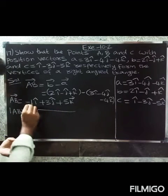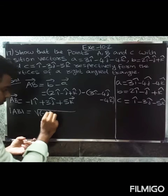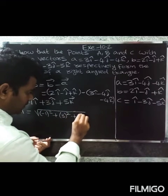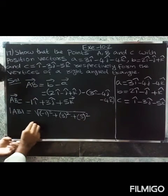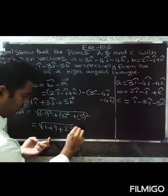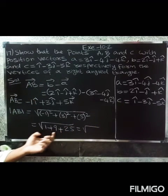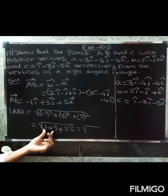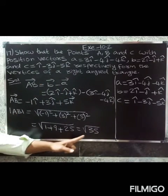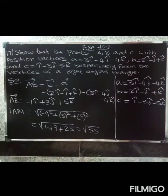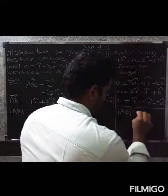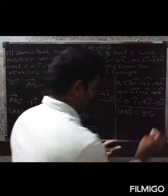Magnitude of AB equals the square root of (minus 1 whole square plus 3 whole square plus 5 whole square), which equals square root of 1 plus 9 plus 25 equals square root of 35. So modulus of AB squared equals 35.